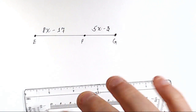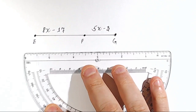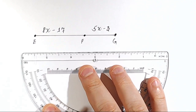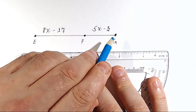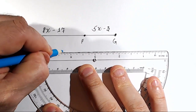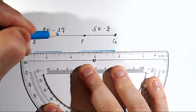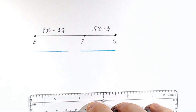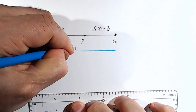We don't have enough information here to do anything yet. But luckily, we're given one more piece of information: the total distance from E all the way to G, this whole distance right here, is 71.